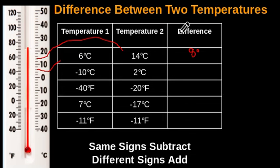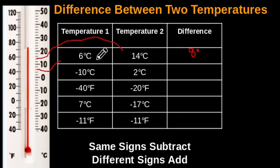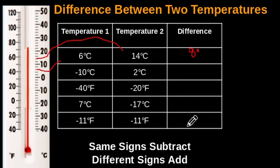Now to the calculation-based method, which is way easier and faster. Same signs, subtract; different signs, add. What does that mean? If you're going to find the difference between two temperatures that have the same sign, you subtract the lesser temperature from the bigger temperature. If you're going to find the difference between two temperatures that have different signs — one positive and one negative — you add the values of those two temperatures. As simple as that.